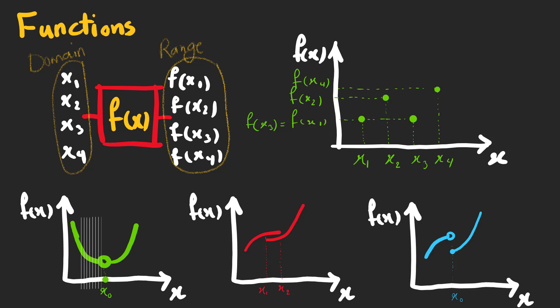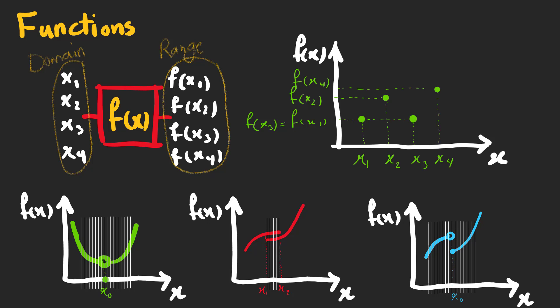The green graph is a function because for each input we have just one output. The red one is not a function because for x's between x1 and x2 we have two outputs for each x. And the blue one is also a function because for each x we have a specific f of x. Let's take a look at some famous functions.